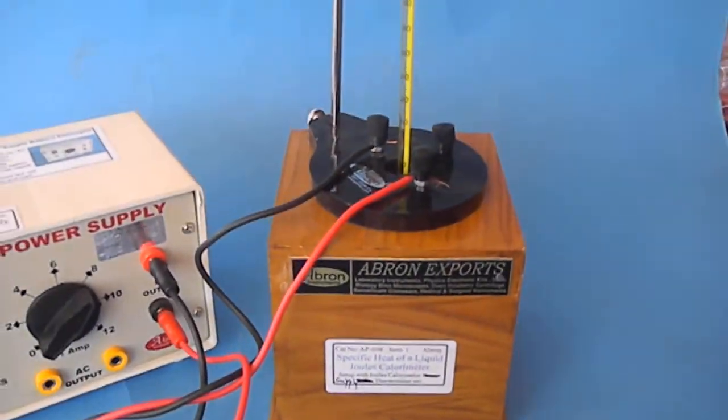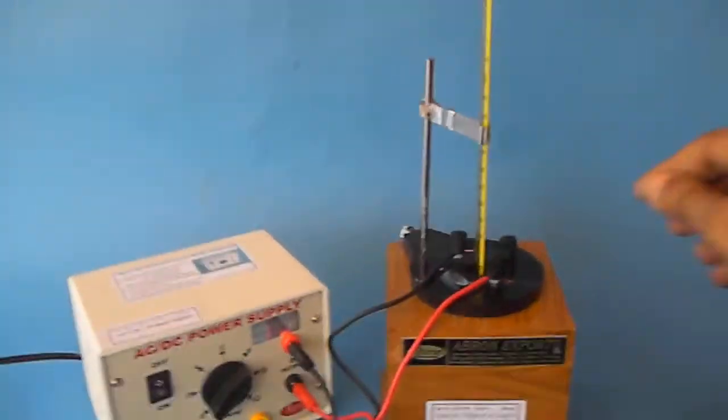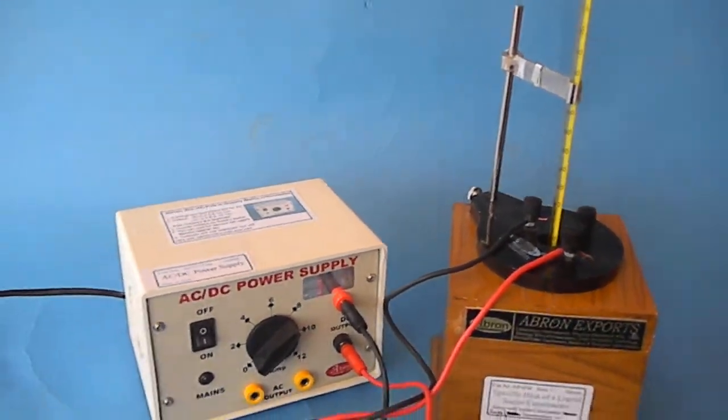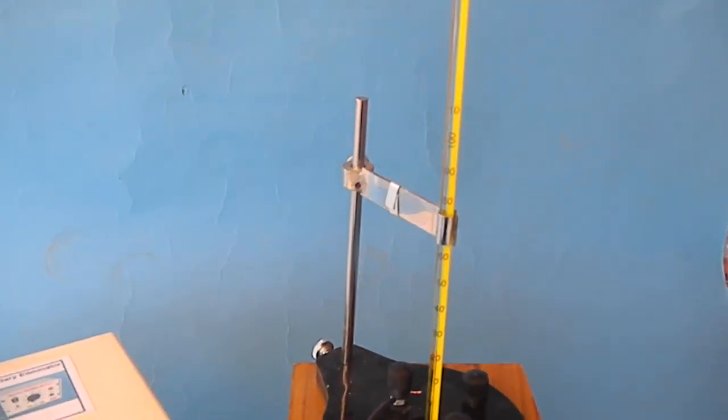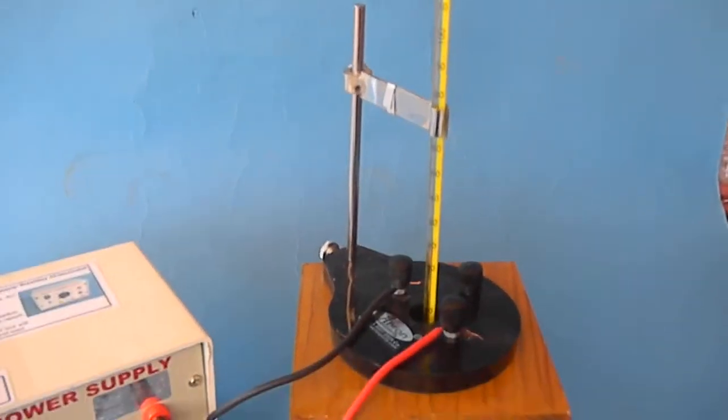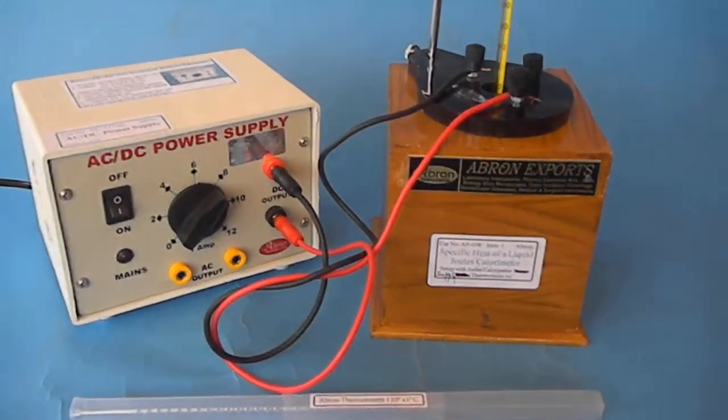We have the joules calorimeter with two stirrers inside, and there is a thermometer attached on the top which hangs inside the calorimeter. A power supply is connected through two wires to the terminal.